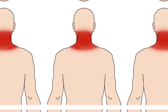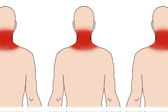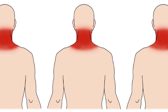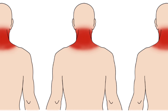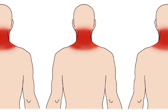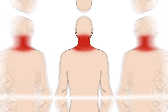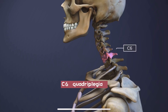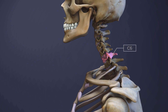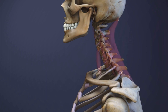But a patient with an incomplete spinal cord injury may have some sensations and movement. A C6 quadriplegia injury is one that affects the lower end of the spinal cord near the base of the neck.